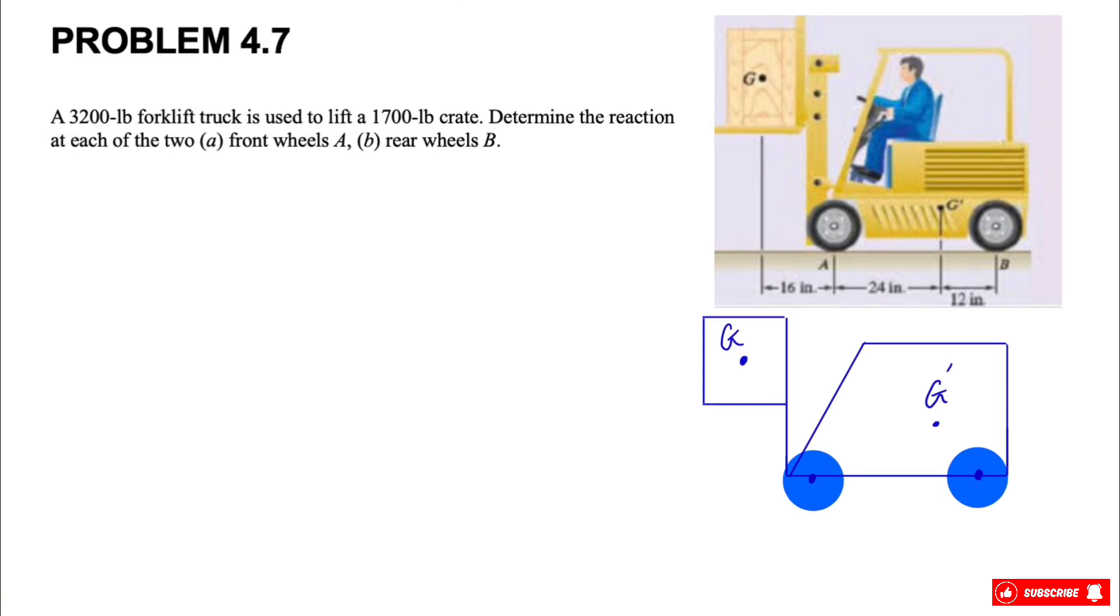And in part B, we need to find the reaction of the two wheels on the back at point B. So as always, we're going to start with the free body diagram.